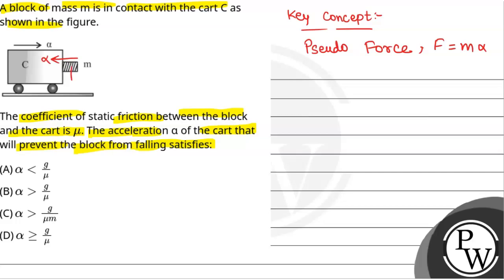The weight of the block will act downward, the normal reaction by the cart will act outward in the forward direction, and the friction will act in the upward direction since the tendency of movement of the block is in the downward direction. The normal reaction N will be equal to the pseudo-force, that is m alpha.